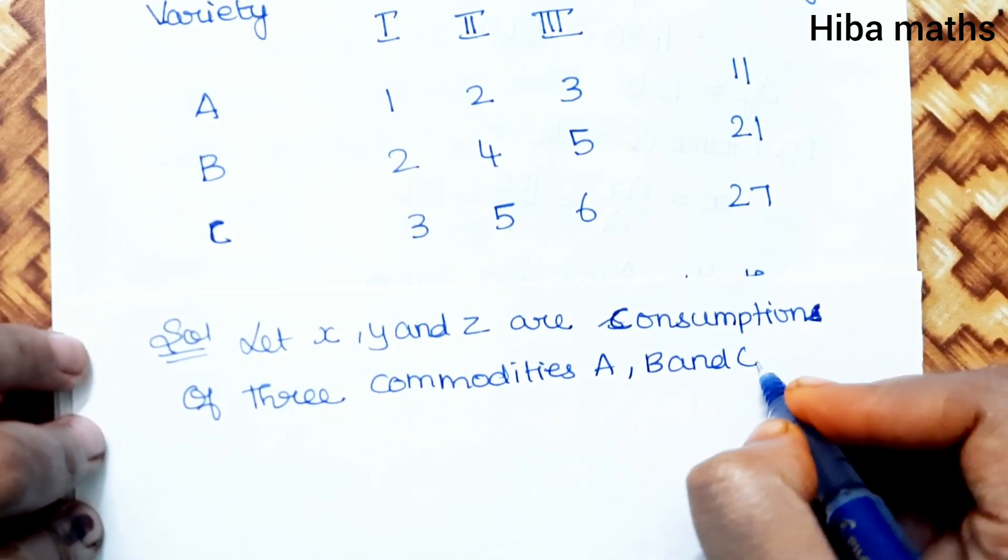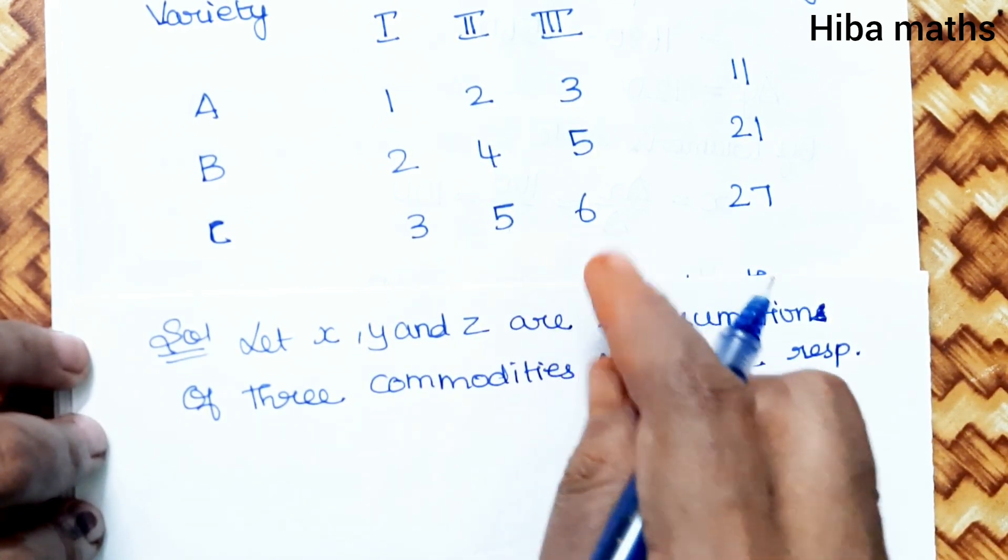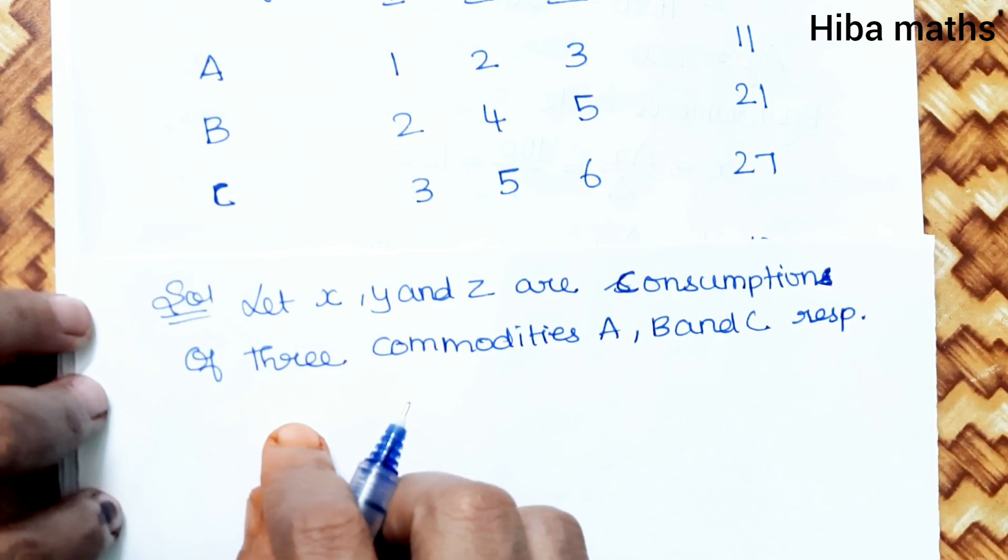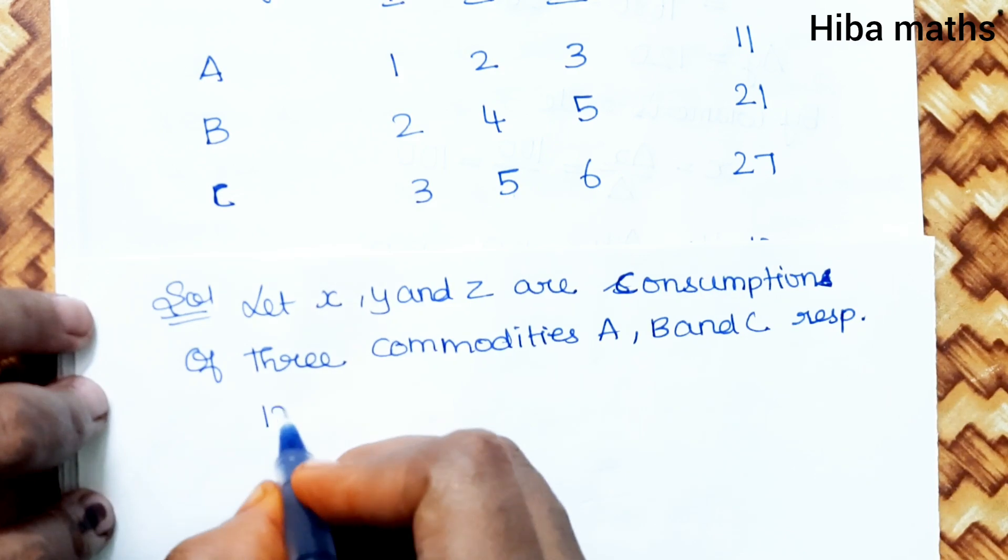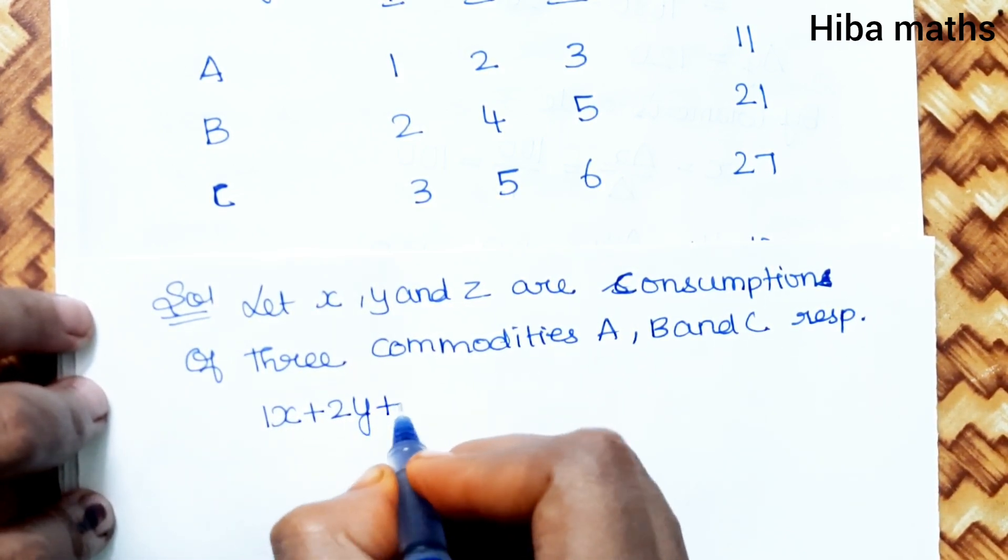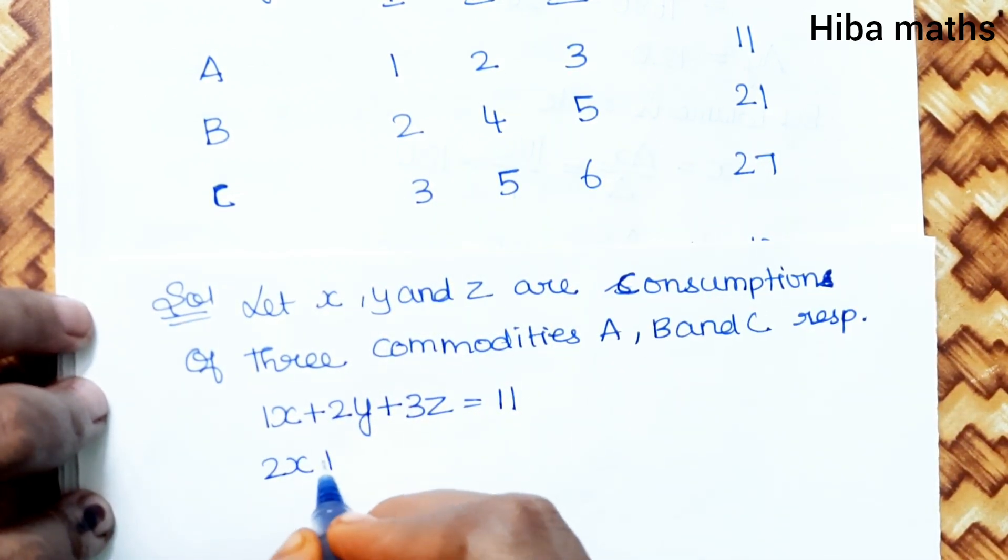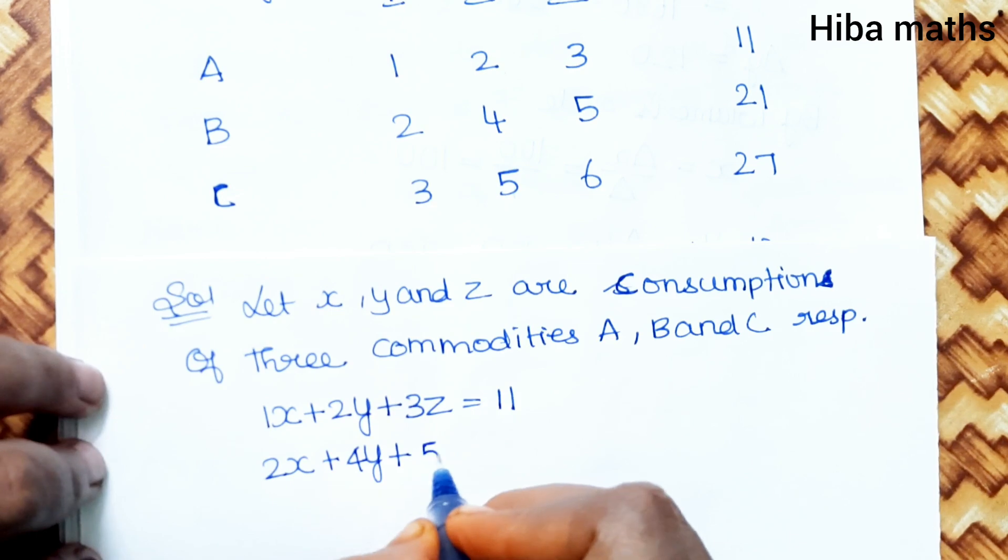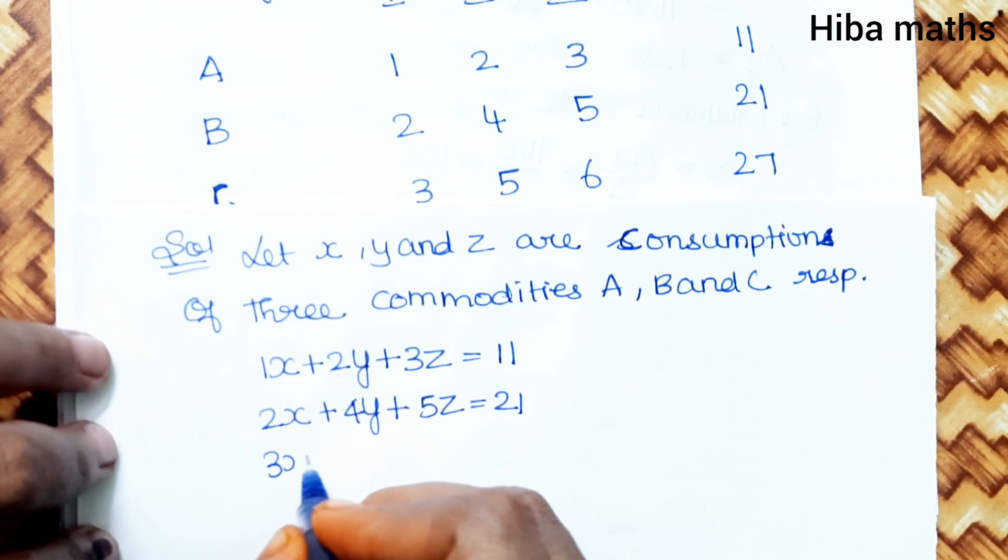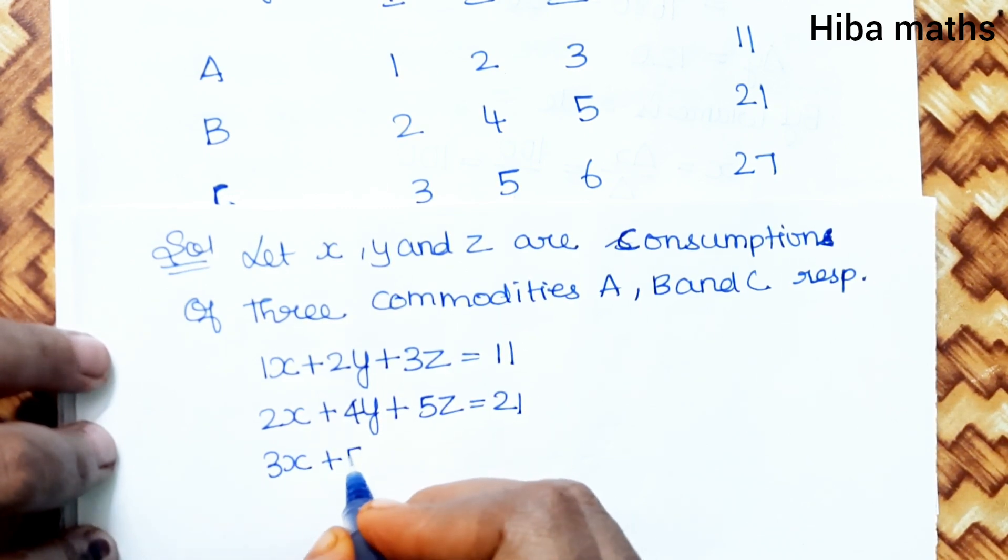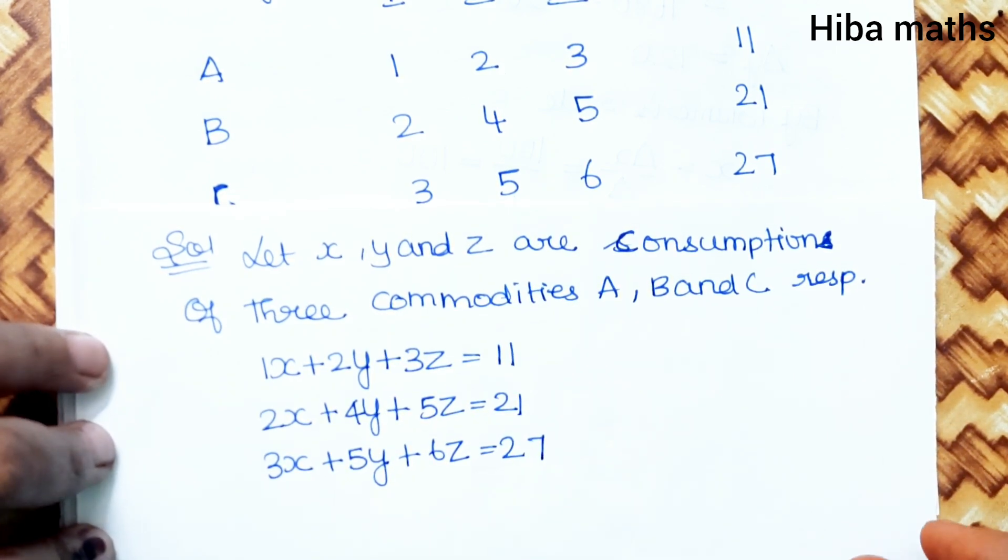We have the equations: First equation: 1x + 2y + 3z = 11. Second equation: 2x + 4y + 5z = 21. Third equation: 3x + 5y + 6z = 27. These are the three equations.